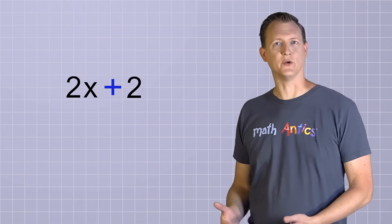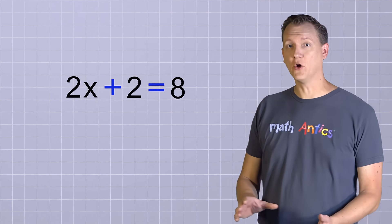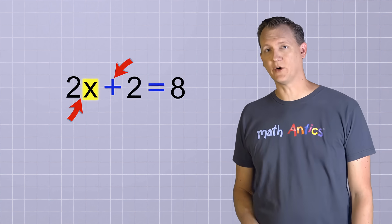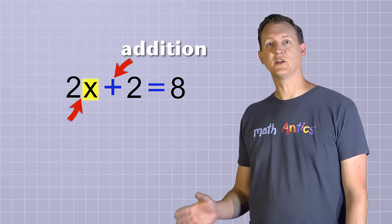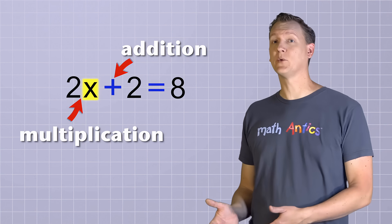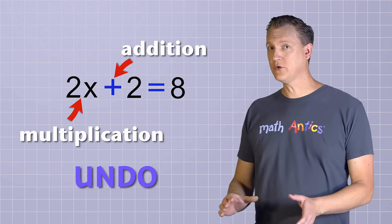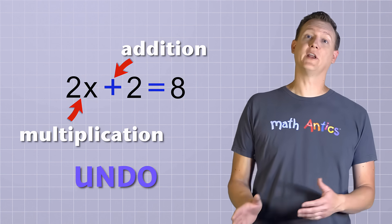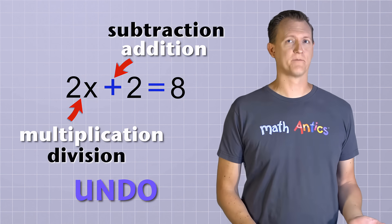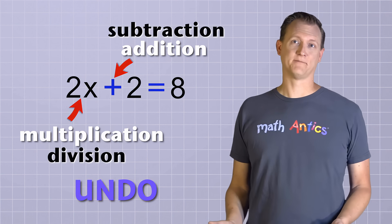2x plus 2 equals 8. In this equation, the unknown value x is involved in two different operations — addition and multiplication, which is implied between the first 2 and the x. And to undo those two operations, we need to use their inverse operations: subtraction and division. But the question is, which one should we do first?